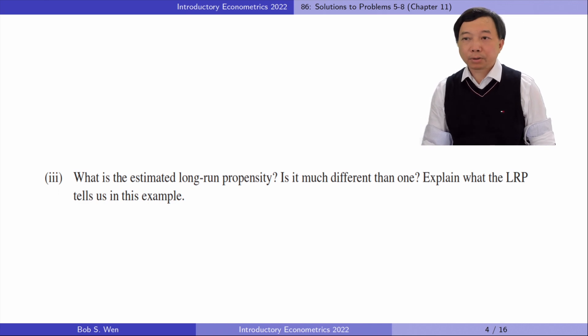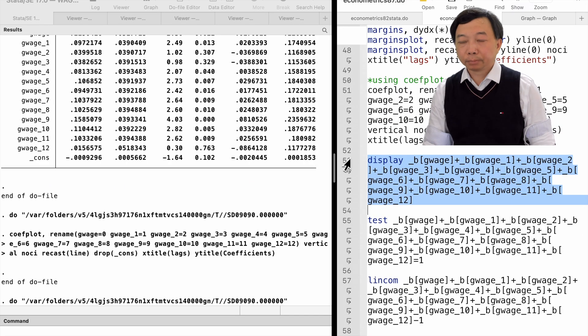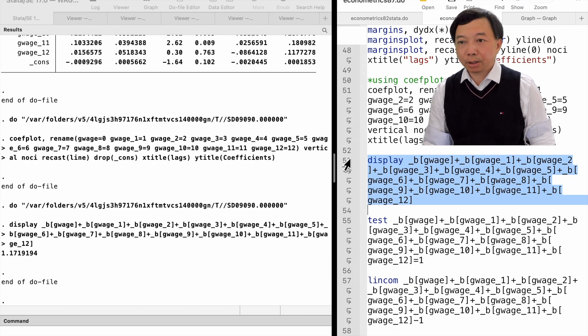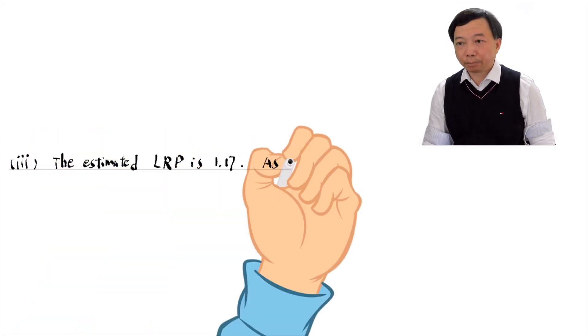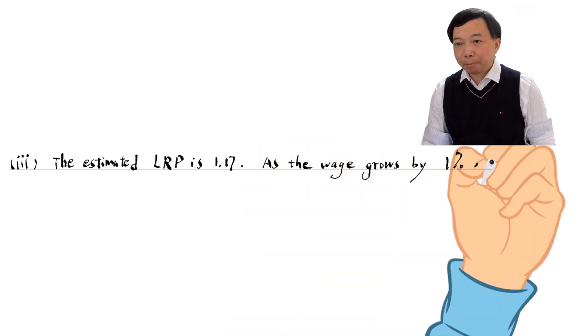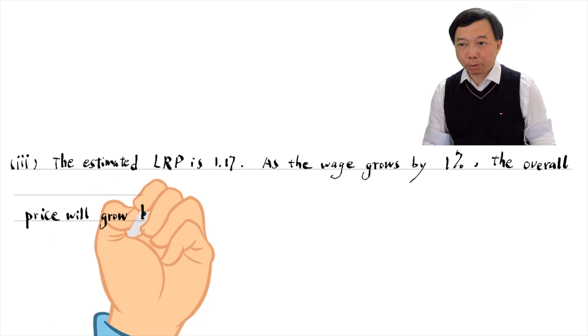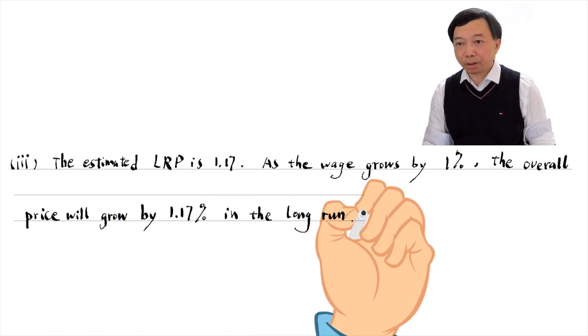In part 3, what is the estimated long-run propensity? Is it much different than 1? Explain what the long-run propensity tells us in this example. The estimated long-run propensity is the sum of the coefficients. It measures the long-run change in price growth, given a one-unit increase in wage growth. It is 1.17. As the wage grows by 1 percent, the price will grow by 1.17 percent in the long run.